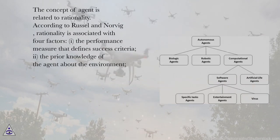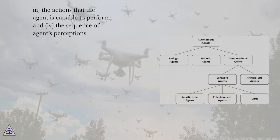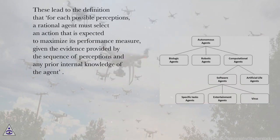The concept of agent is related to rationality. According to Russell and Norvig, rationality is associated with four factors: 1. The performance measure that defines success criteria; 2. The prior knowledge of the agent about the environment; 3. The actions that the agent is capable of performing; and 4. The sequence of the agent's perceptions. These lead to the definition that for each possible perception sequence, a rational agent must select an action that is expected to maximize its performance measure, given the evidence provided by the sequence of perceptions and any prior internal knowledge of the agent.